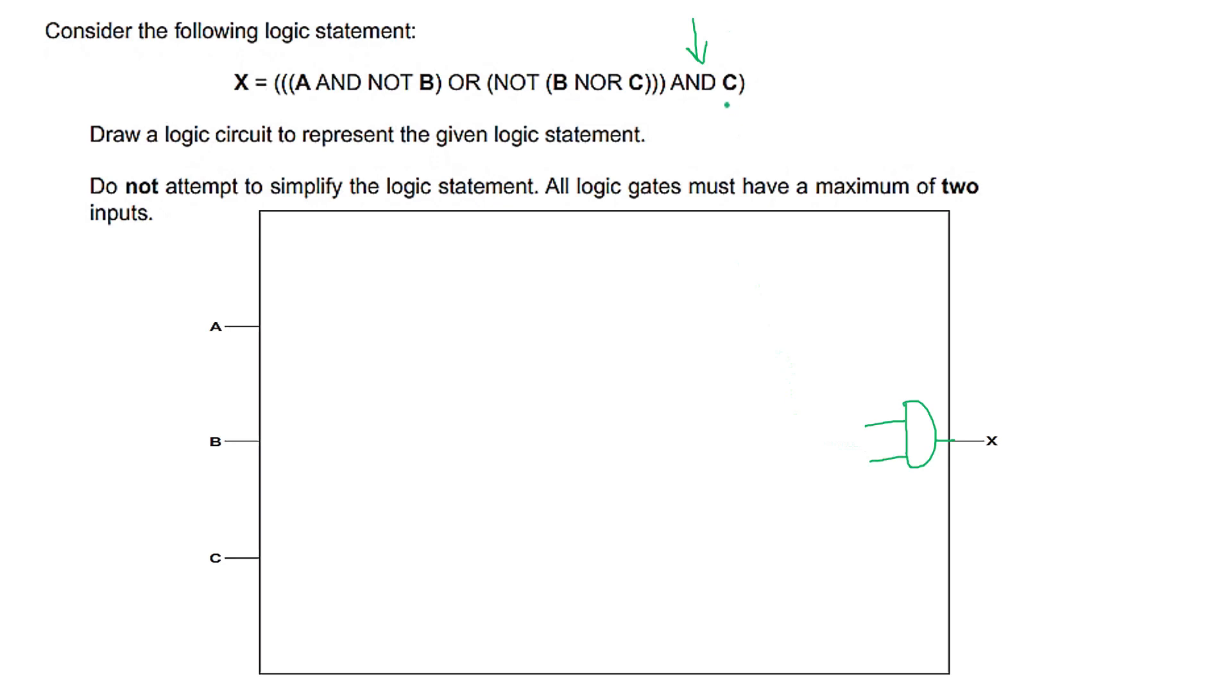Now the first input is C. We have an extension from C and connect it here. After that, the second input is a complete bracket. I will highlight it. This is the second input.